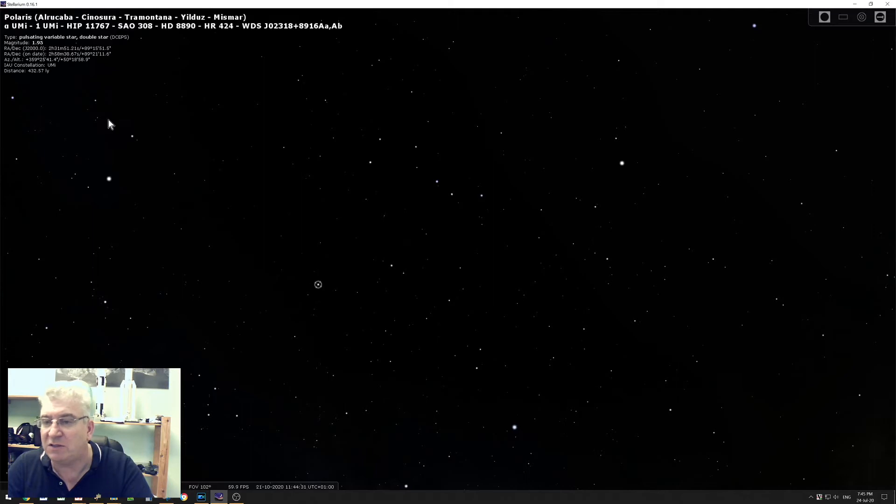If I click on that star, you can see that that is Polaris. That's why Polaris is so important to people in the Northern Hemisphere for doing astrophotography because it's particularly useful for helping us to correct for the movement of the stars in the sky.